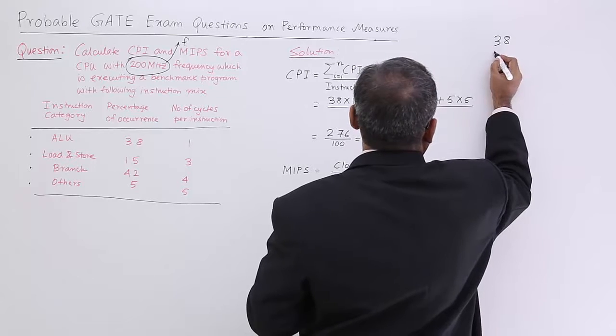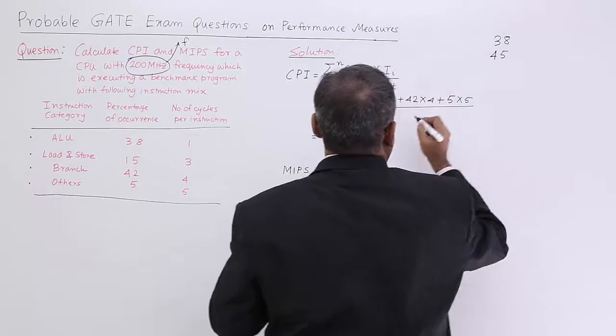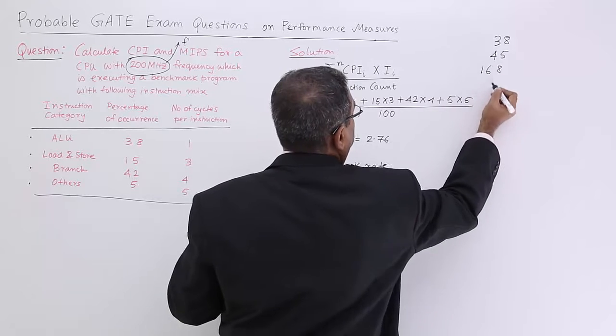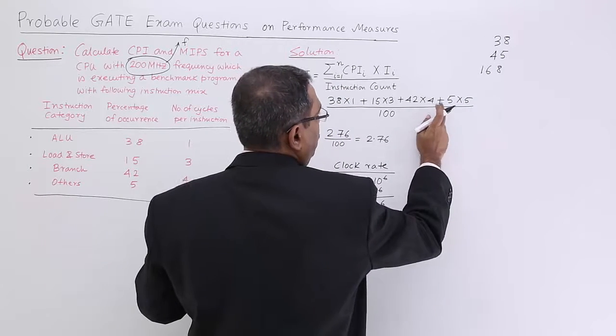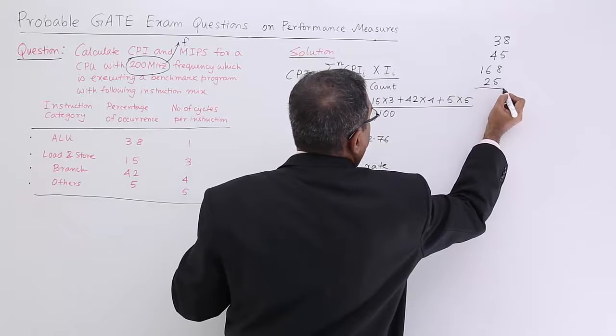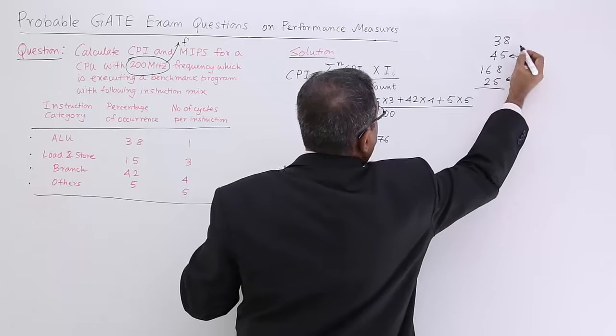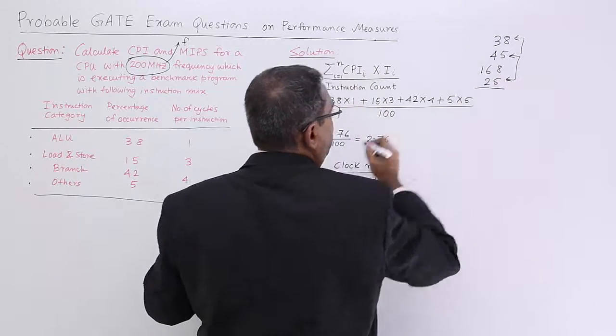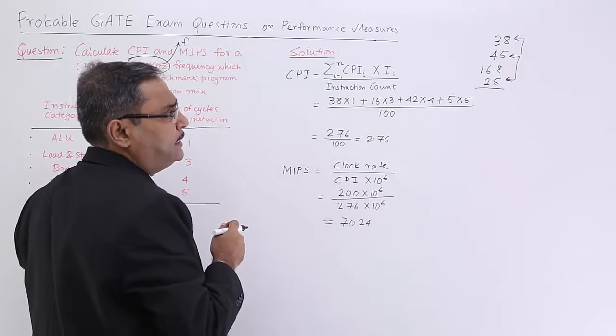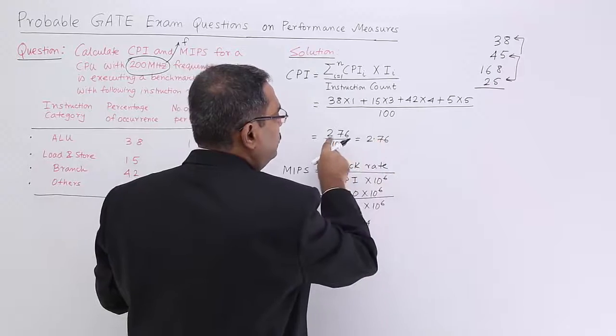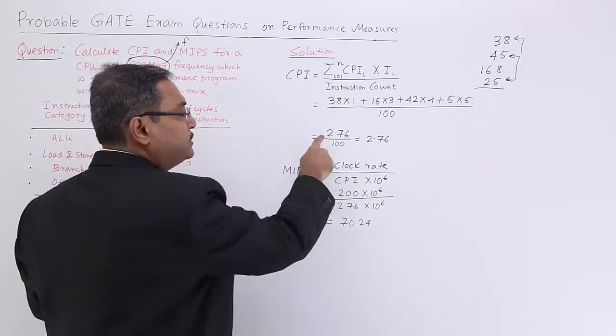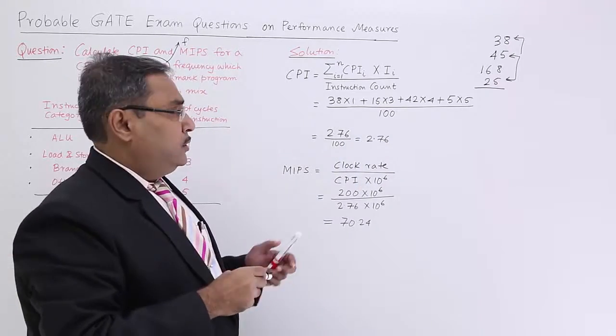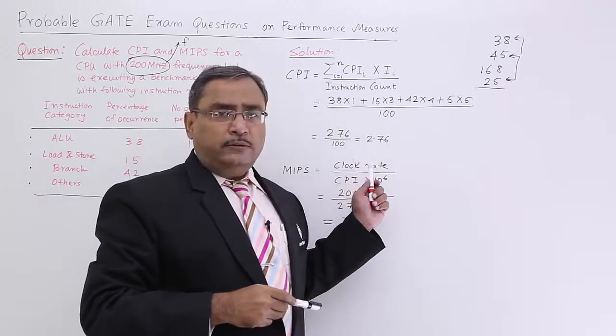Let me go for the addition. 38 into 1, 15 into 3, 42 into 4, and 5 into 5. If we add them: 38 plus 45 is 83, plus 168 is 251, plus 25 is 276. So 276 by 100, that is 2.76. This is a very simple calculation.